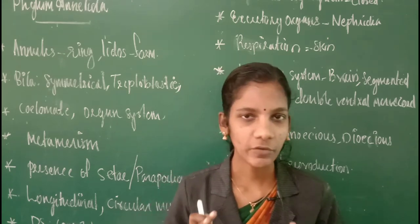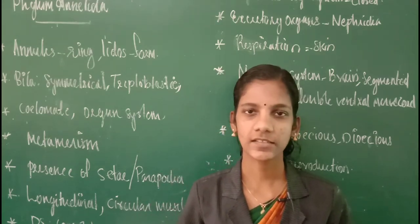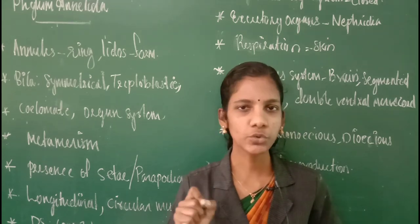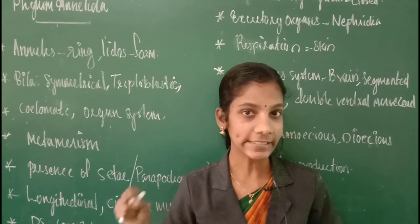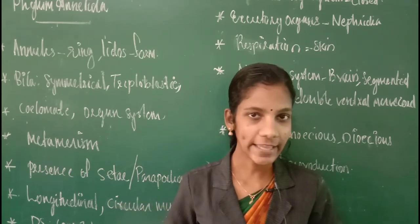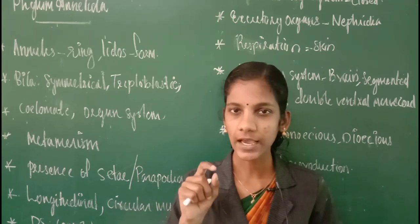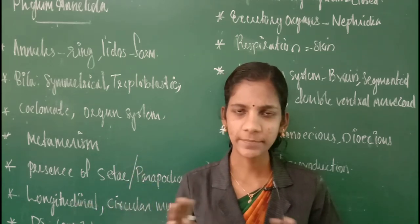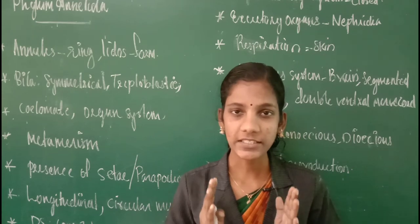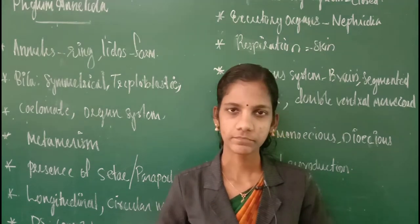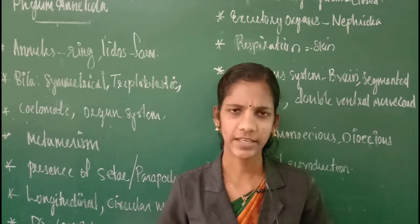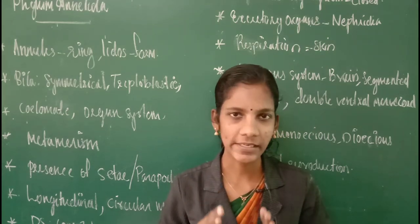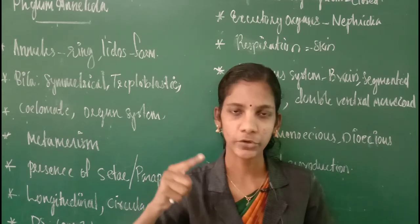Let's study about phylum Annelida. The word Annelida is derived from two Latin words: Annulus and Lidos. What is meant by Annulus? Annulus means ring. And Lidos means form. So what is the meaning of the term Annelida? Ring-like form, or ring form. This indicates that all animals which will come under phylum Annelida have a ring-like body.